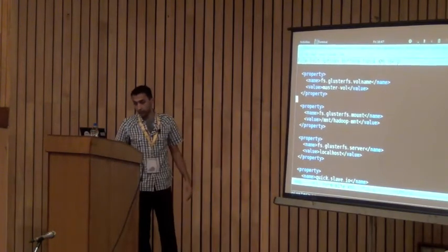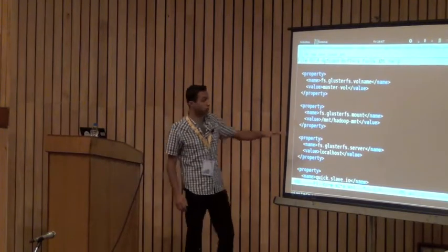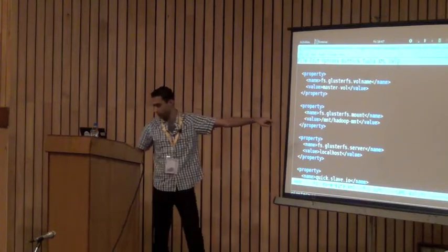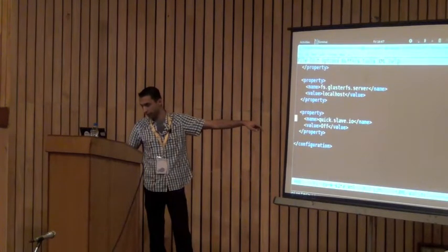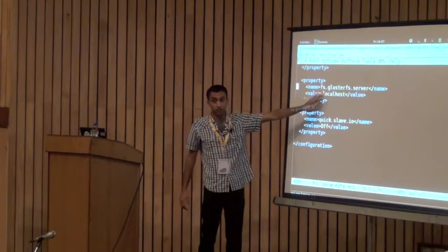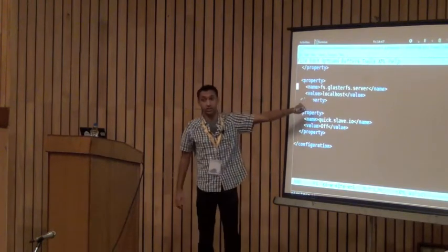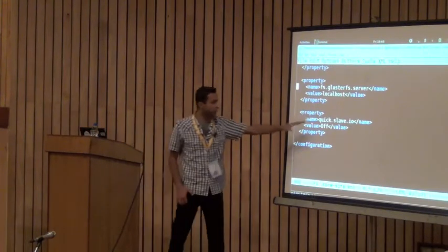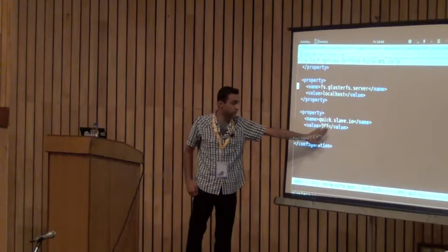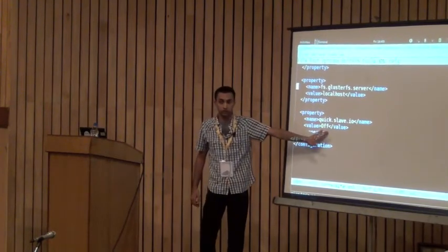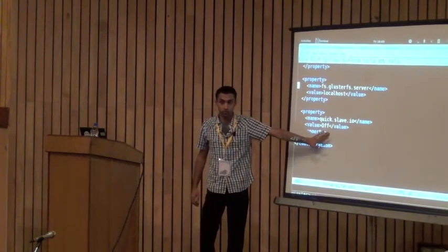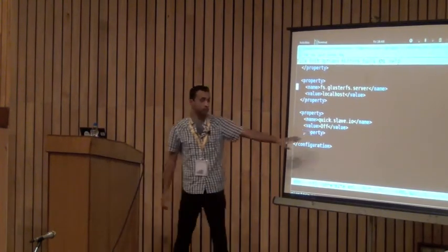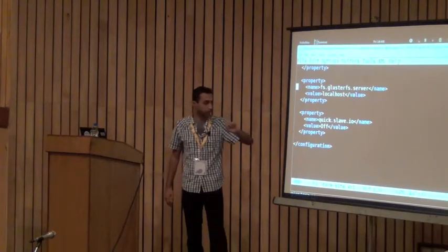Next is the mount point. Because we do a fuse mount, you need to give a mount point — this directory should already exist. Also, because it needs to do a mount, you need to give the hostname or IP address of any storage node. And finally there is a performance tunable called QuickSlave IO — for now just leave it set to off. It gives a performance boost but we have seen some bugs with it, so leave it off for now.